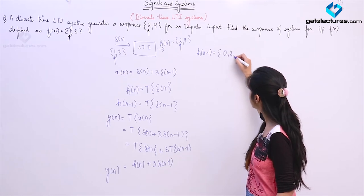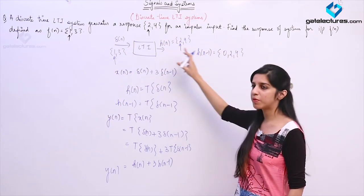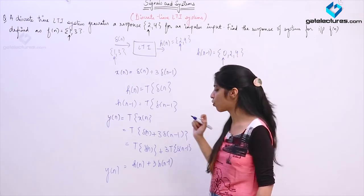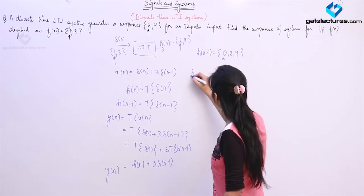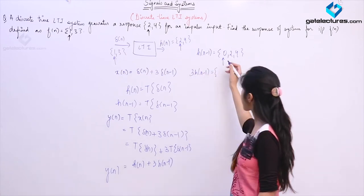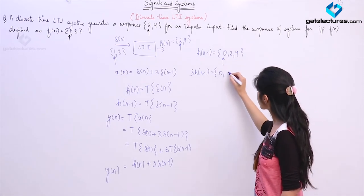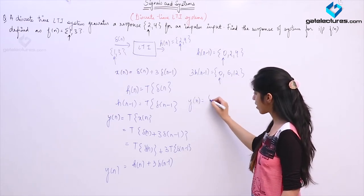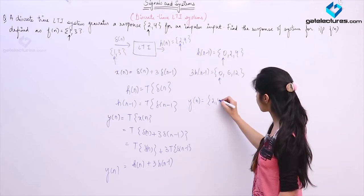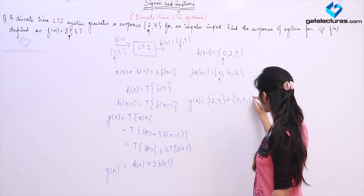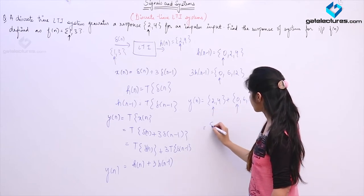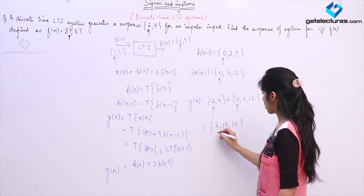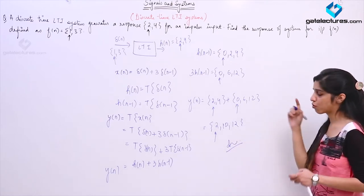If you shift this signal to the right by 1 unit, the value which occurred at n=0 previously is going to occur at n=1, and at n=0 we get a new sample of value 0. So h[n−1] = {0, 2, 4}. Then 3·h[n−1] = {0, 6, 12}. Now y[n] = h[n] + 3·h[n−1] = {2, 4} + {0, 6, 12}. Therefore the samples are: n=0 gives 2, then 10, then 12.